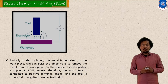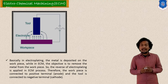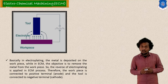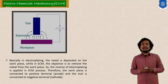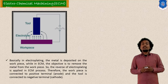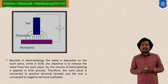In Electrochemical Machining, a DC voltage or current supply is given. The tool is connected with the cathode and the workpiece, from which you are going to remove the material, is connected with the anode. DC supply is given and electrolyte liquid is used. The material removal is based on Faraday's law of electrolysis.